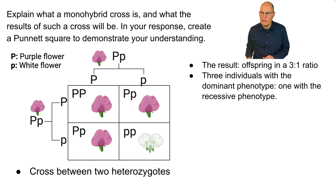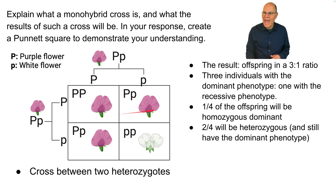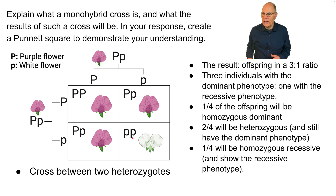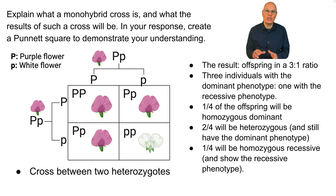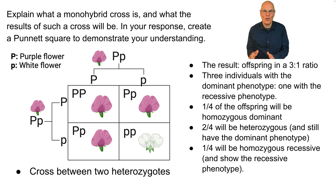We have three individuals with the dominant phenotype and one with the recessive phenotype. A quarter of the offspring are homozygous dominant, half are heterozygous and still have the dominant phenotype, and one quarter are homozygous recessive and show the recessive phenotype. That's how you do a Punnett square for a monohybrid cross.